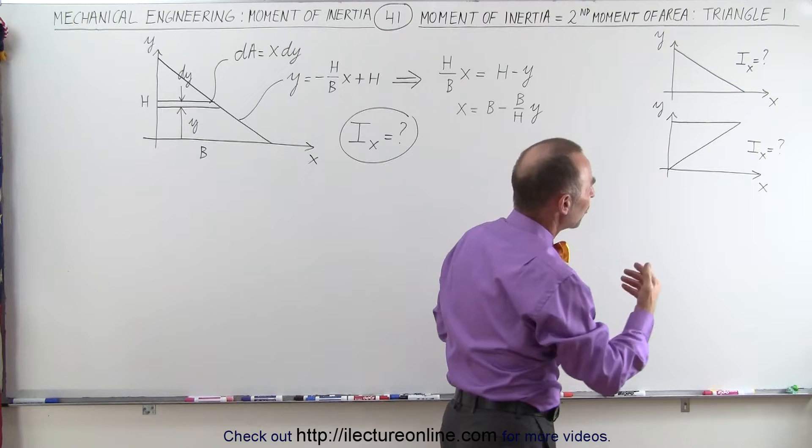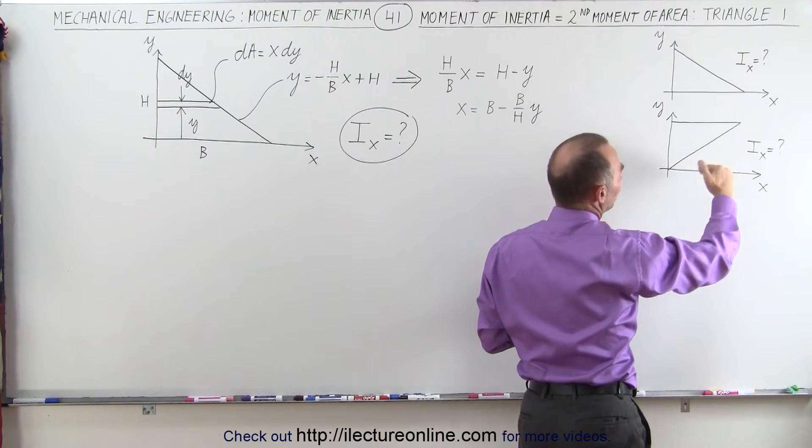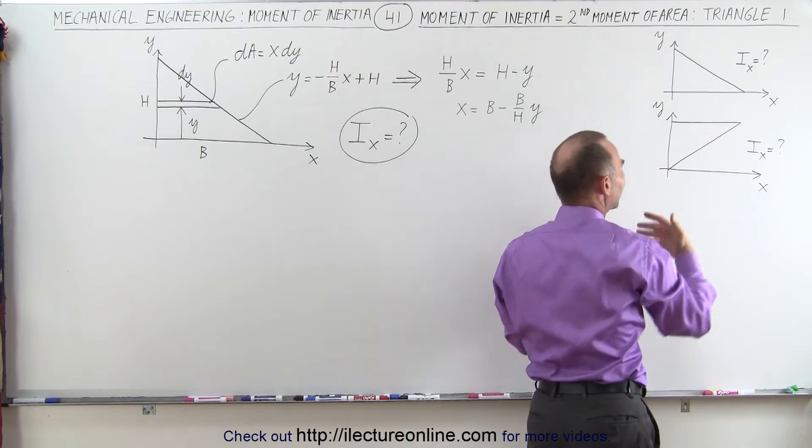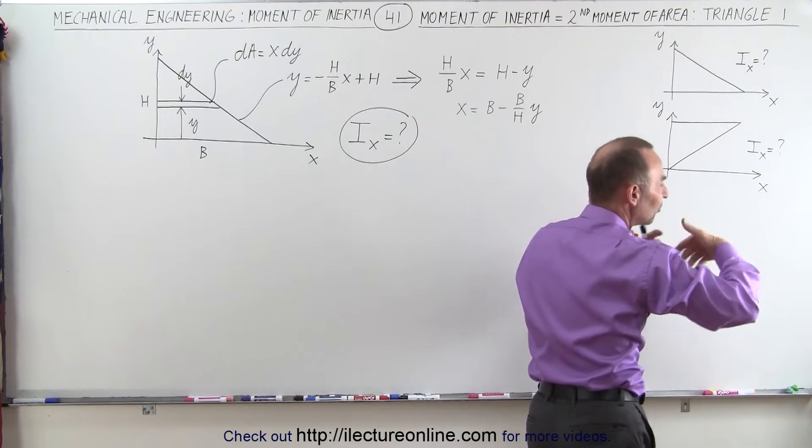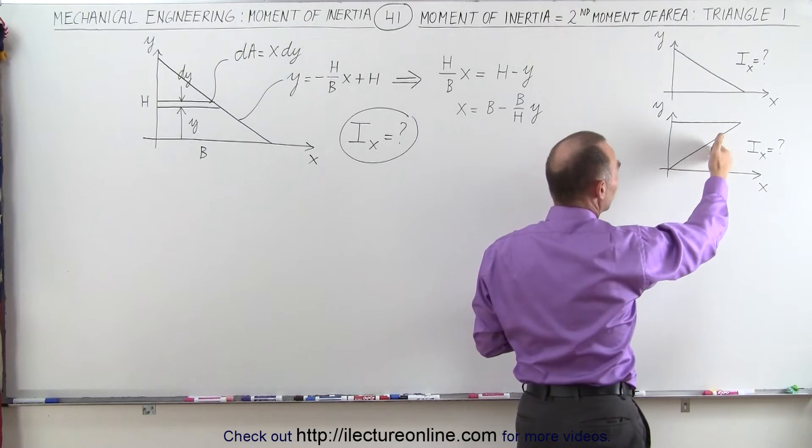We could also have the triangle situated like this, with most of its area, or most of its mass, farther away from the x-axis. So even though these triangles have the exact same area, just having them situated differently, you realize you're going to end up at a different moment of inertia.